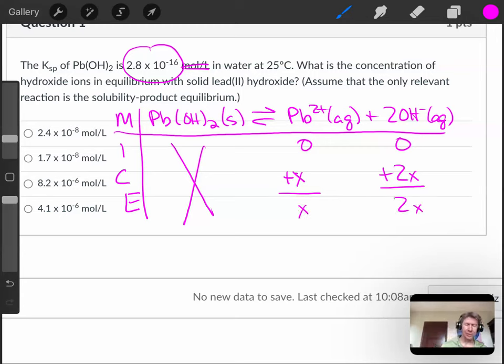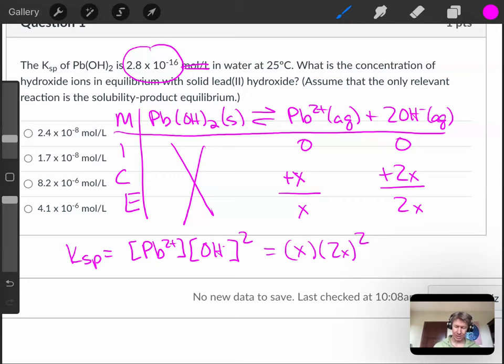And especially for these Ksps, I always write out my expression. That's going to be lead(II) times hydroxide ion concentration squared, which will be x times 2x squared.